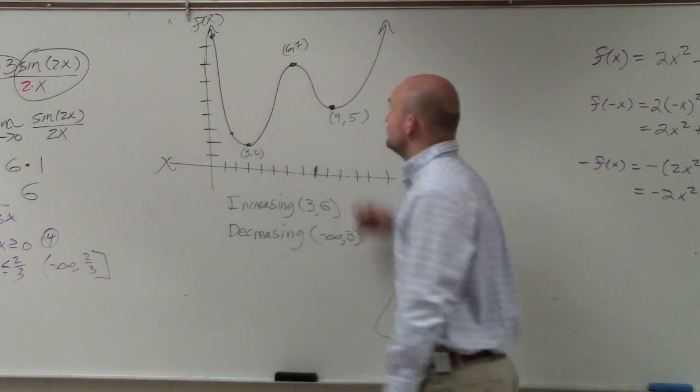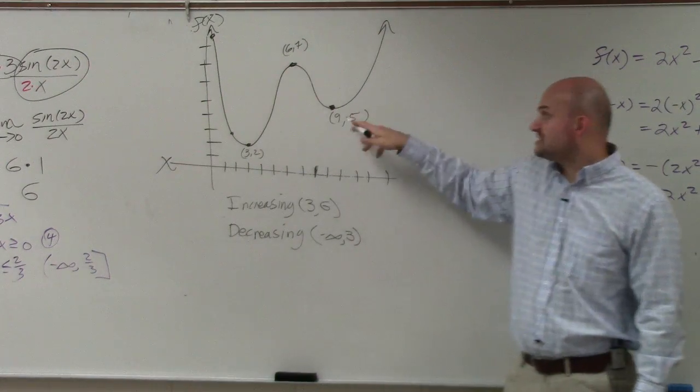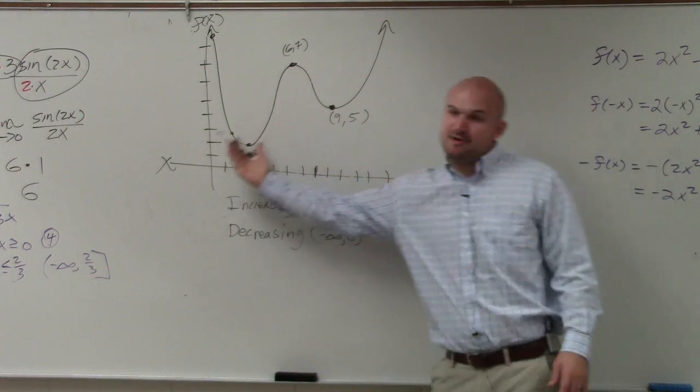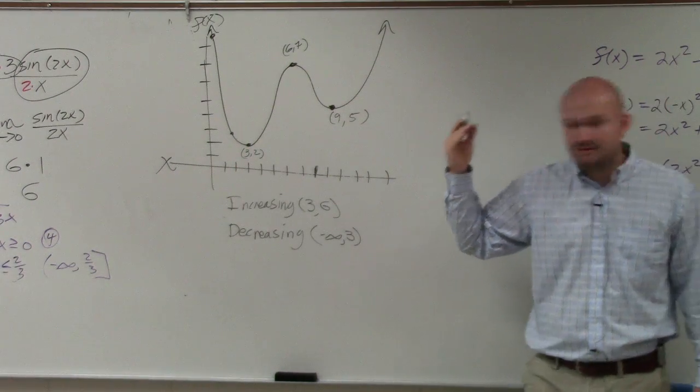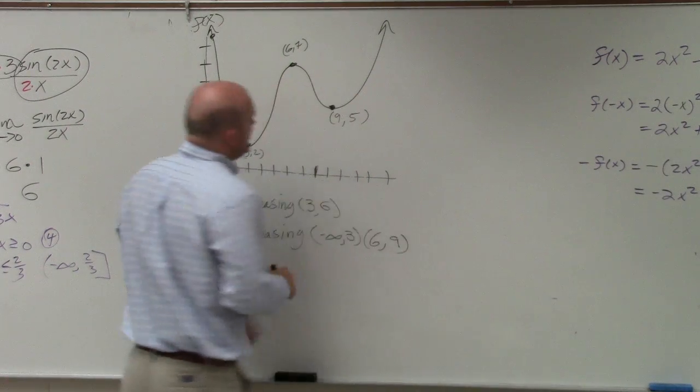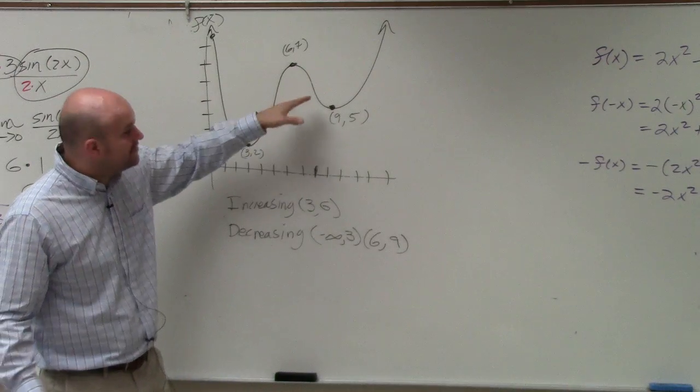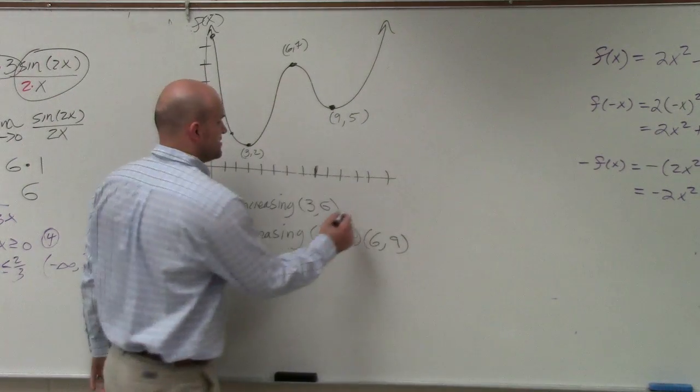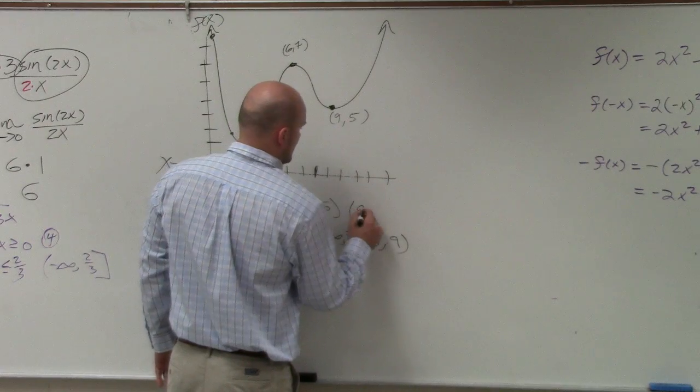So, then we continue. So from the x value 6 to the x value 9, so as we keep on moving to the right, the graph is obviously decreasing. And then from the x value 9 to infinity, the graph is increasing.